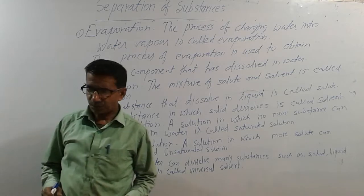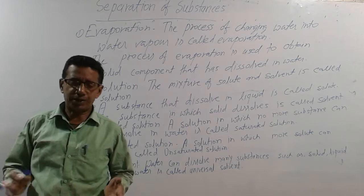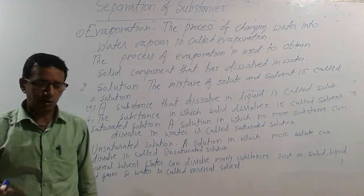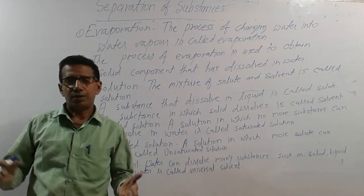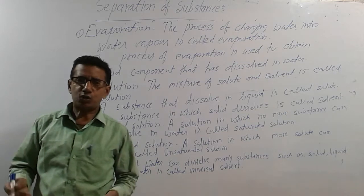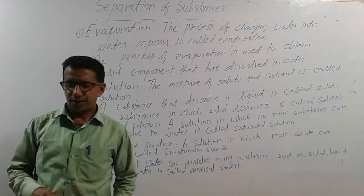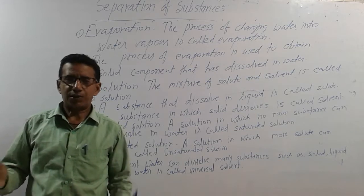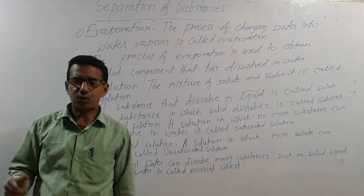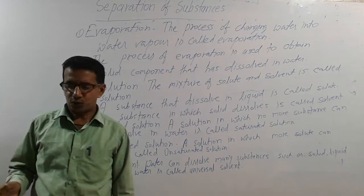Let us see what is evaporation. Evaporation is a process by which water converts into water vapor, or we can say the process by which water changes into water vapor is called evaporation. We see that a lot of substances can dissolve in water, and when we want to separate these substances we can separate them through evaporation. Water evaporates at 100 degrees Celsius.